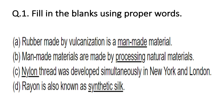Question number 1 is fill in the blanks using proper words. First fill in the blank: rubber made by vulcanization is a man-made material. The answer is man-made material, because though rubber is obtained naturally from the plant, there has to be the process of vulcanization. It is the process of hardening of the rubber and that is carried out by humans, so we can say that it is the man-made material.